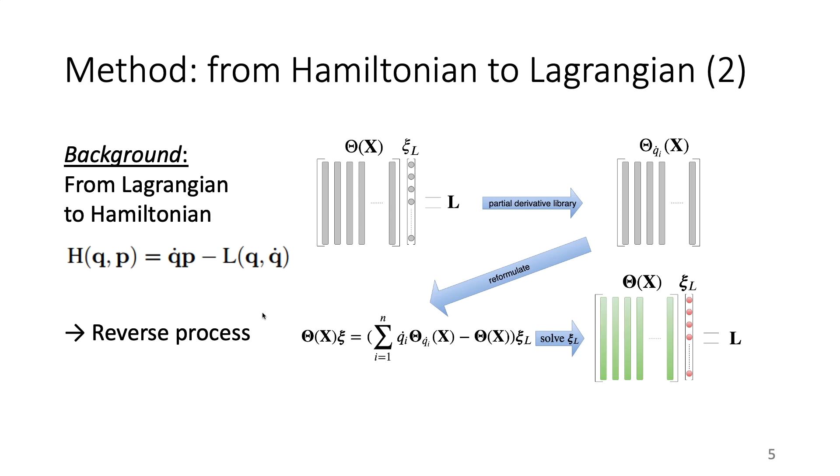If we reuse theta in the previous step, the Lagrangian can be represented as theta c. We can rewrite the equation as this equation. Although it looks slightly complex, it is a linear equation, and c can be solved easily to eventually give us the Lagrangian.